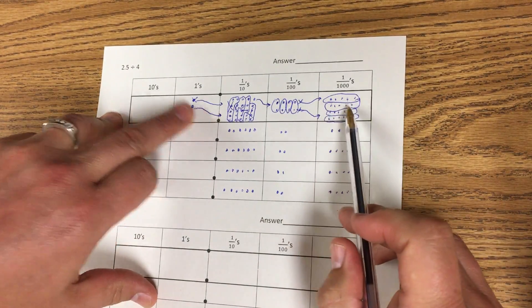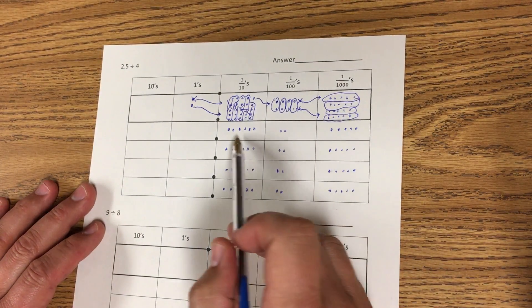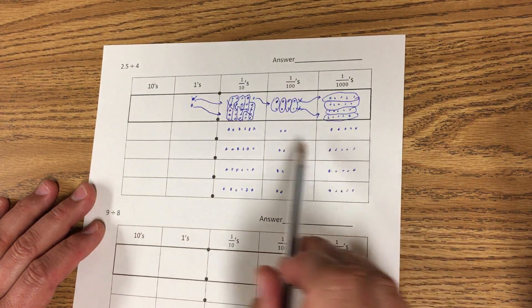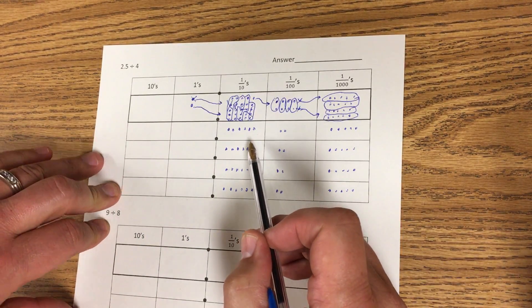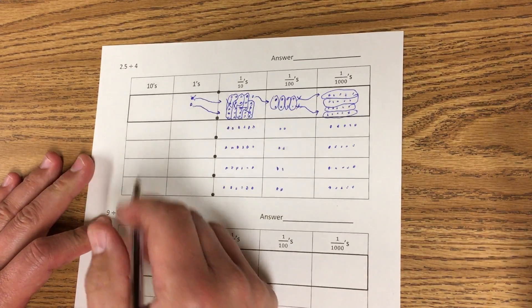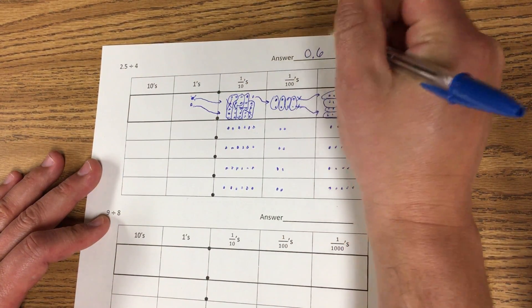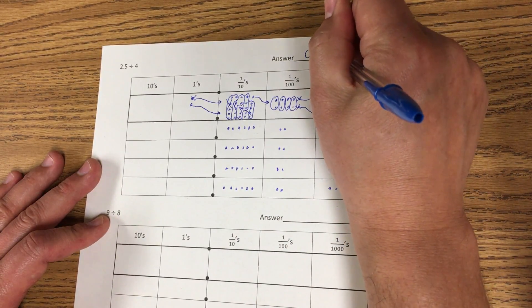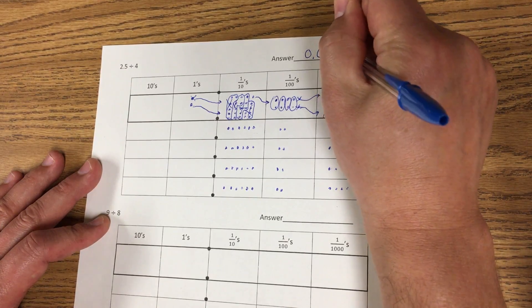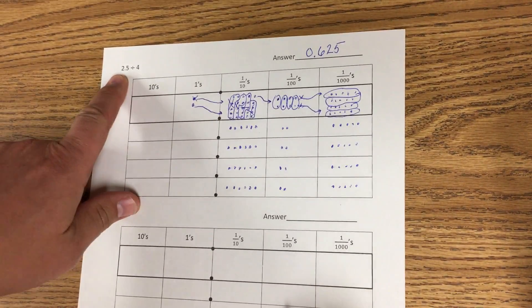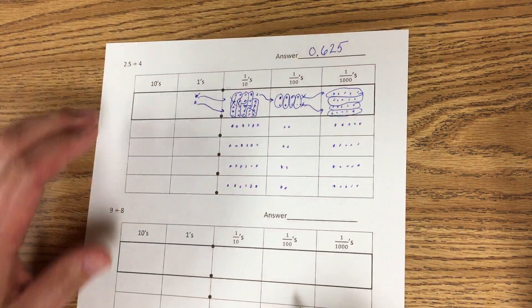Now there's none left, so I'm actually done with the division part. Now the answer is one of these rows. So you can see that they're all the same. So we just have to see what amount that is. There's 6 tenths, so I'll just write it down here. I have 6 tenths, 2 hundredths, and 5 thousandths. So 2 and 5 tenths divided by 4 is 625 thousandths.